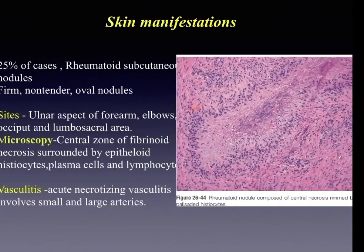Extra-articular manifestations of rheumatoid arthritis include subcutaneous firm non-tender nodules in about 25 percent of cases, mainly on the ulnar aspect of the forearm, elbows, and lumbosacral area. Microscopically, these show a central zone of fibrinoid necrosis surrounded by epithelioid histiocytes, plasma cells, and lymphocytes.